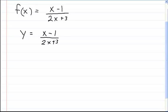Then we want to isolate x by itself. So let's move over the 2x plus 3. We're going to do this: y times (2x plus 3) equals x minus 1.